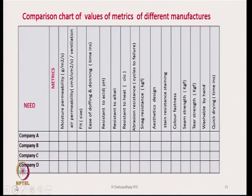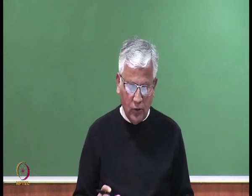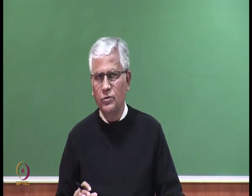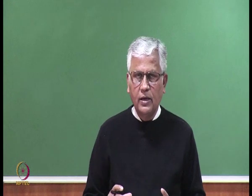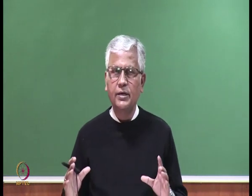A compression chart of metric values from different manufacturers is created by testing products from company A, B, C, D and recording values for each metric. This allows comparison of which company provides the best or lowest value for a particular metric and what the range is. All this data can be compiled and used to design a set of specifications for the intended product.